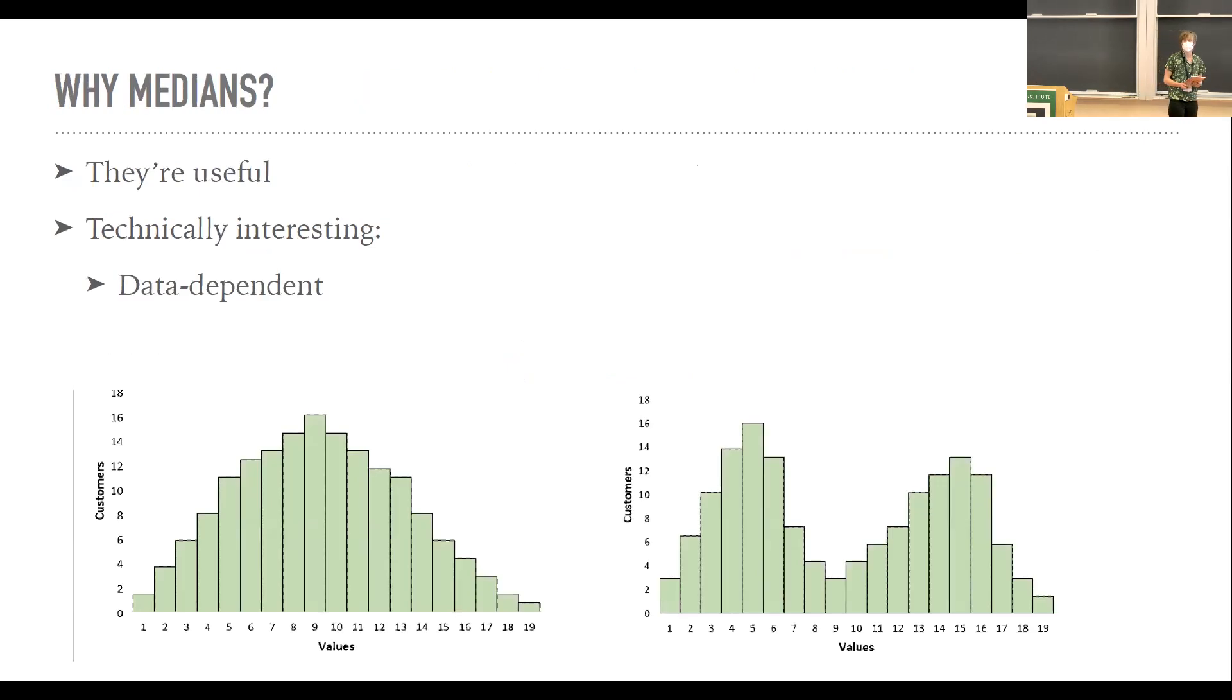So why do we consider medians? Just to be clear, these are single dimensional medians. So we're moving back from the multivariate case that was just talked about. But they're still interesting in this context. First of all, they're just a useful summary statistic. We use them anytime you have a skewed distribution. For example, U.S. income levels are very skewed distribution, and people like to use medians to talk about those since they're a lot more informative. But also from a technical perspective, they're a bit interesting because they're pretty data dependent.